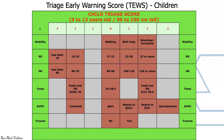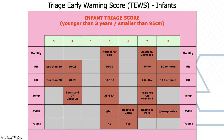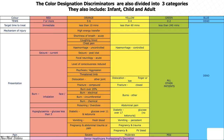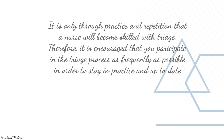The Triage Early Warning System is also applied to children and infants, based upon their respective triage scores. Color designations and discriminators are divided into three categories: infant, child, and adult. It is only through practice and repetition that a nurse will become skilled with triage; it is therefore encouraged that you participate in the triage process as frequently as possible to stay in practice and up to date.